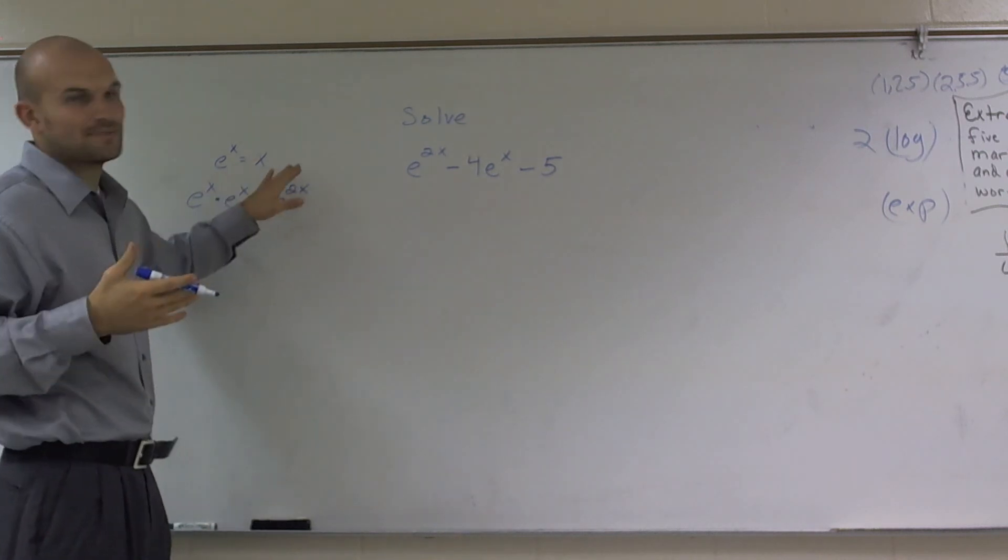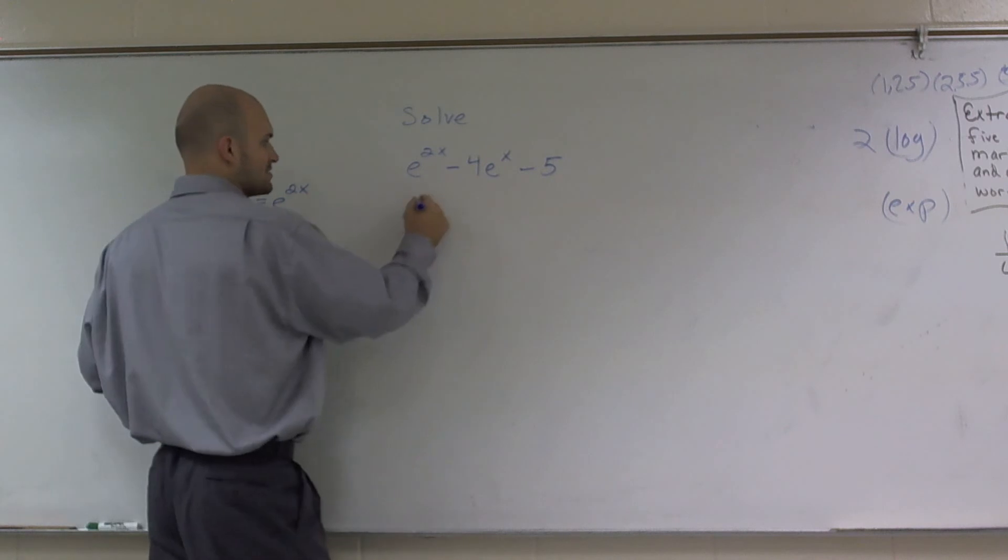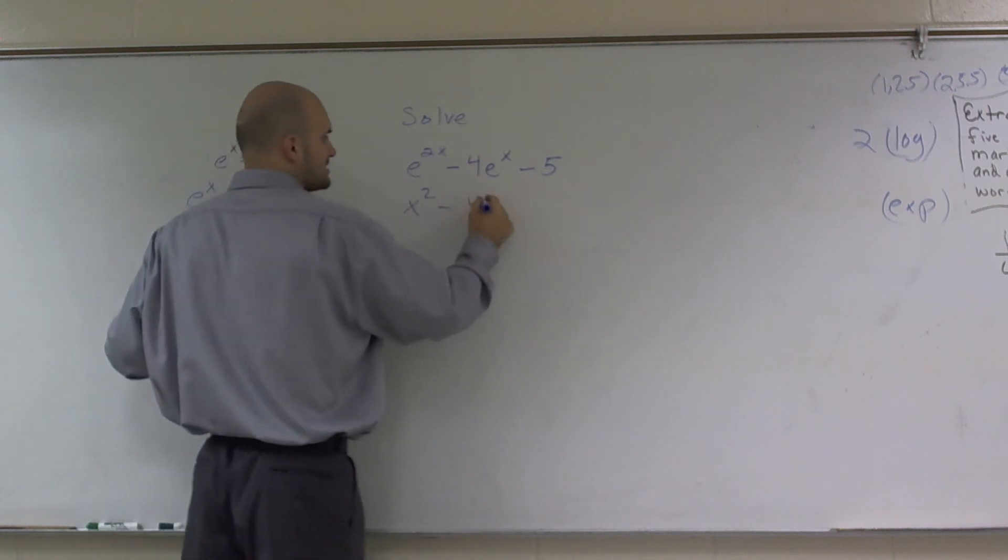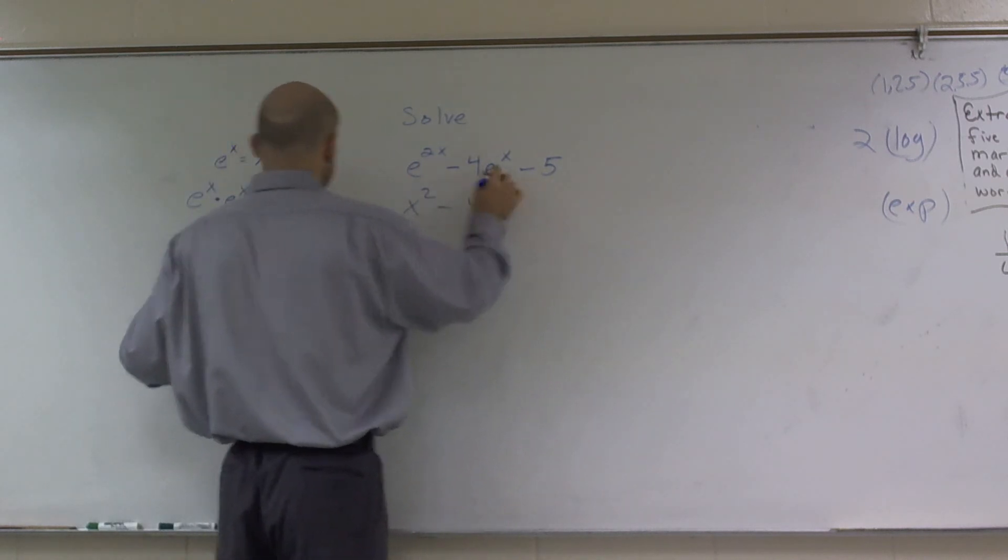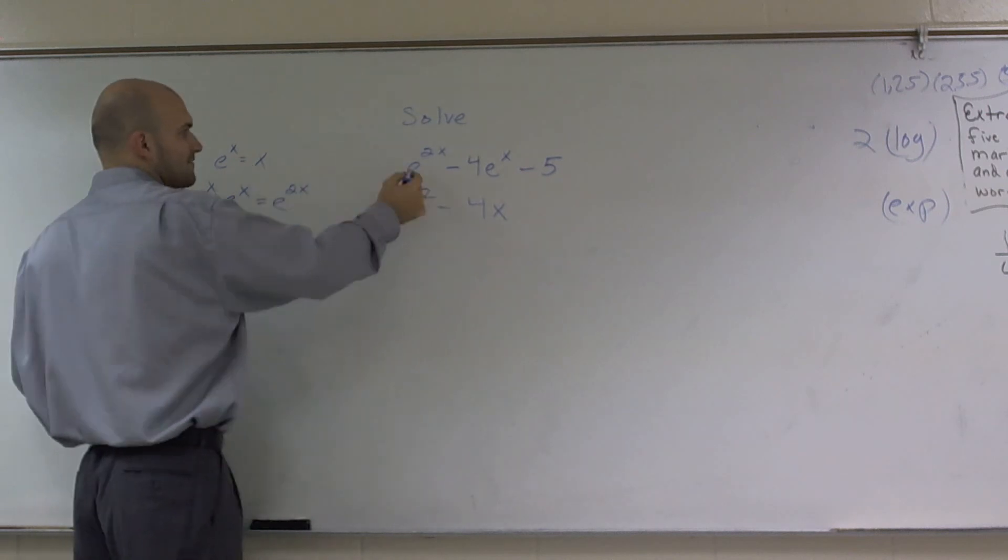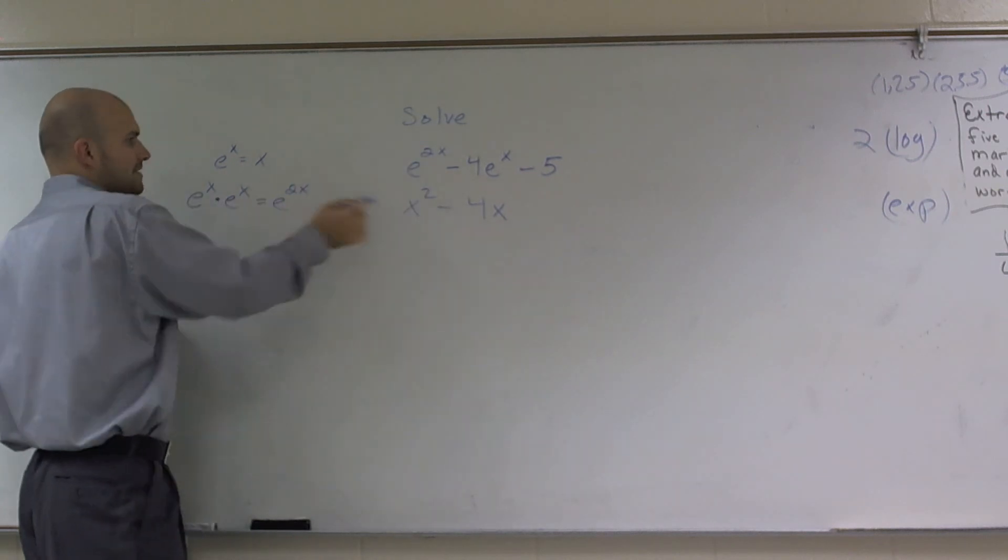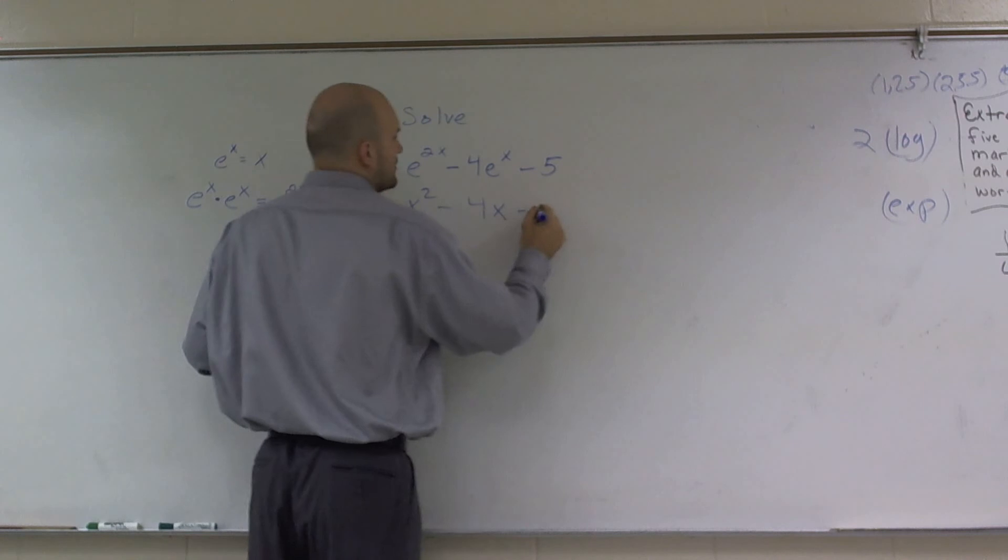Well anyways, let's do substitution first and factor this so we can see it. So this could be x squared minus 4 times x, because I said e to the x equals x. So therefore, e to the 2x is x squared minus 5.